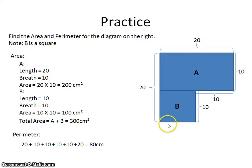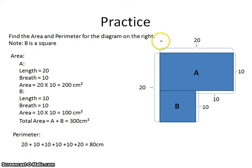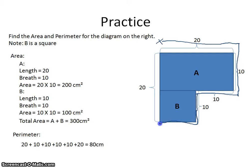Now for the perimeter. Let's say we start running from point X. We run 20, then plus 10 = 30, then plus 10 = 40, then plus 10 = 50, then plus 10 = 60, and then all the way back to where we started — giving us 80 centimeters for the perimeter.